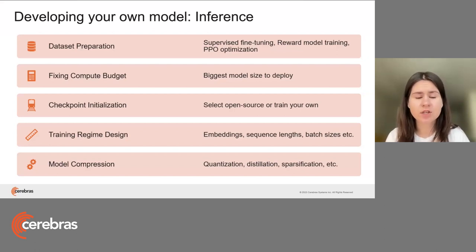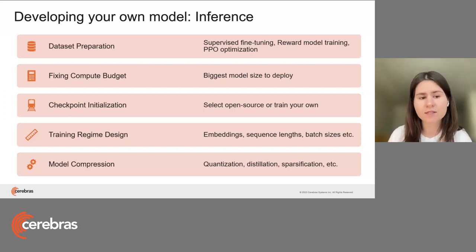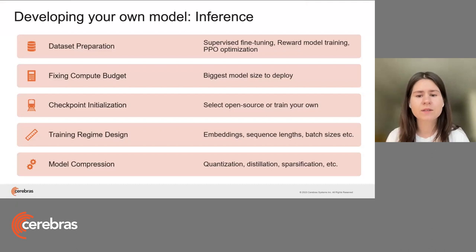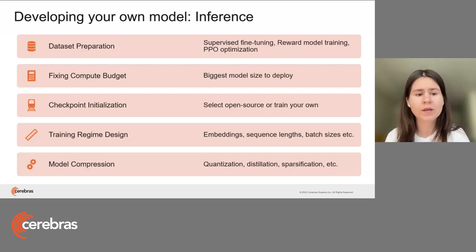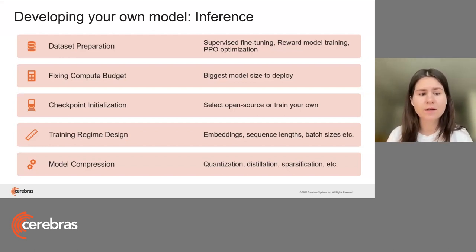These stages involve a lot of effort, specifically if you have a custom application where you cannot find datasets available online. Most of the time you can find good supervised fine-tuning datasets, but whenever you hit reward model training or PPO optimization, it really depends on what type of model you want to deploy. That might involve hiring people and assessing outputs and curating the model.